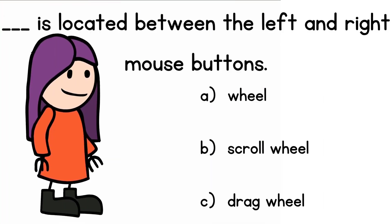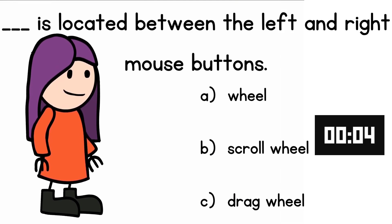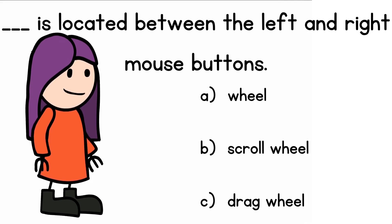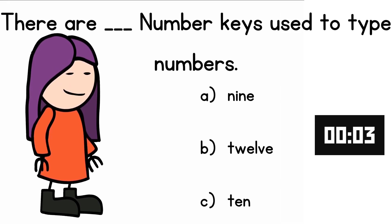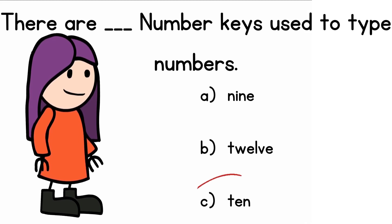The scroll wheel is located between the left and the right mouse buttons. The answer is scroll wheel. There are 10 number keys used to type numbers.